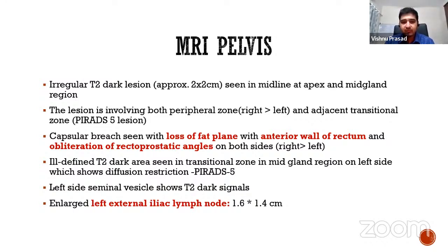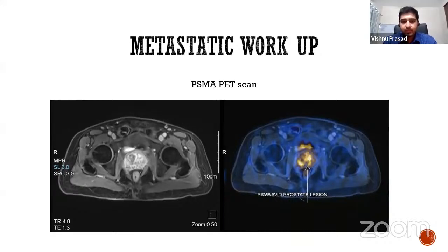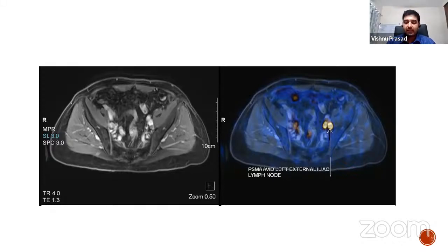We did an MRI pelvis which showed a T2 lesion in the right peripheral zone as well as the transitional zone extending outside the prostate. The final MRI report showed a T2 lesion at the midline at the apex and mid-gland in both peripheral zones and adjacent transitional zones — a PI-RADS 5 lesion. There was capsular breach with loss of fat planes with the anterior wall of rectum and obliteration of rectoprostatic angles on both sides, right side more than left. The left seminal vesicle showed a T2 dark signal. An enlarged external iliac node measured approximately 1.6 centimeters.